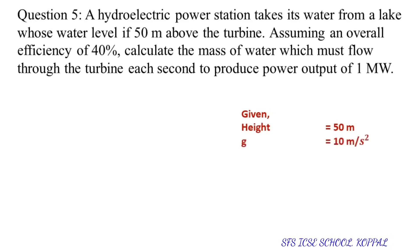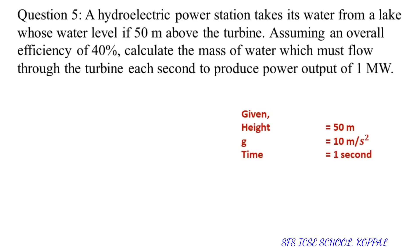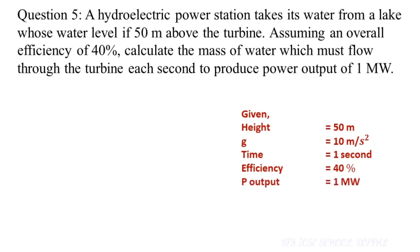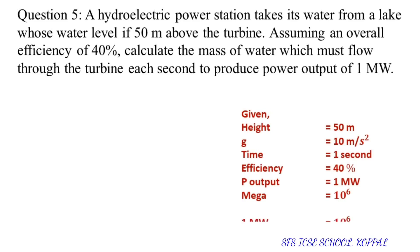Let us write the values given in the question: height is equal to 50 meters, gravity is 10 meters per second squared, time is 1 second, efficiency is 40%, and power output is 1 megawatt. Mega stands for 10 raised to power 6, and therefore 1 megawatt is equal to 10 raised to power 6 watts.